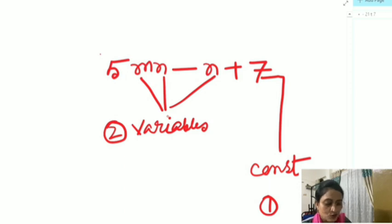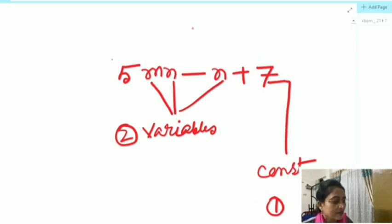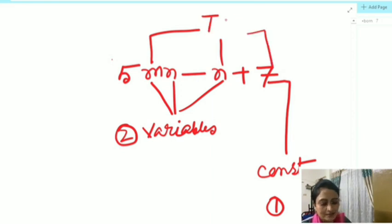Now let's move on to terms. This 5mn, minus n, and 7—these are terms. Terms are the parts of an algebraic expression which are added. I am repeating the word added—added to form an expression. Here, 5mn is added to minus n, then added to 7 to get this expression. These are the terms of an algebraic expression.